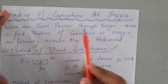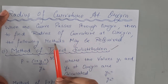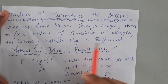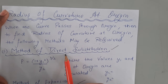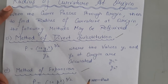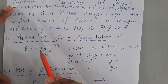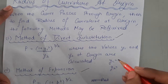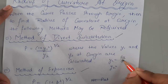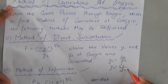When the curve passes through the origin, to find the radius of curvature at origin the following methods may be required. The very first method is the method of direct substitution. According to this method the radius of curvature is given by: one plus y₁ squared, whole power three by two, divided by y₂ — where y₁ is dy/dx and y₂ is d²y/dx².